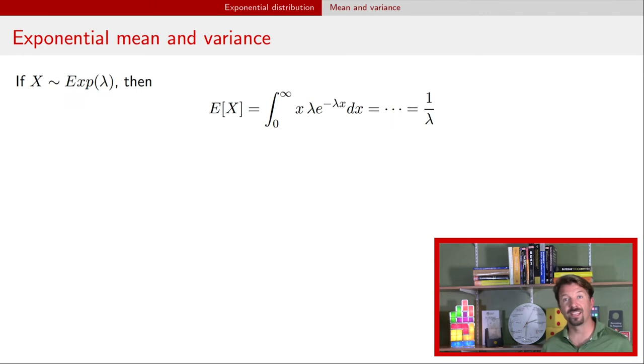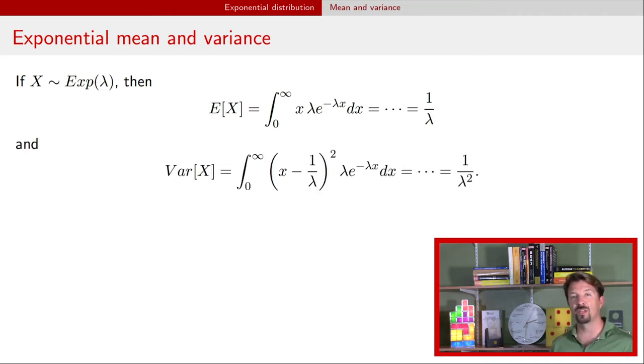Now we can calculate from that PDF the expectation or mean for an exponential random variable. It turns out that the mean is just 1 over the rate parameter, and we can do a similar calculation to find the variance. The variance turns out to be 1 over that rate parameter squared.